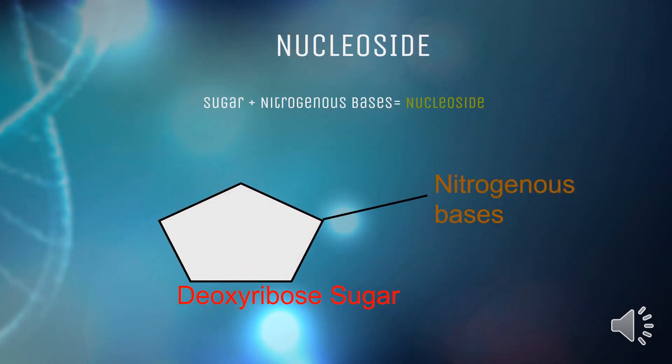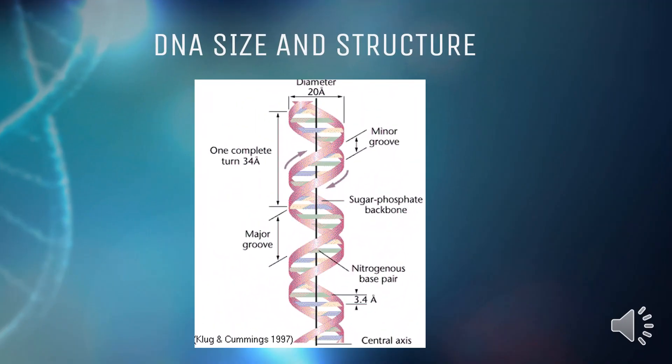Nucleosides are glycosamines that can be thought of as nucleotides without a phosphate group. A nucleoside consists of a nitrogenous base and a 5-carbon sugar — either ribose or 2-deoxyribose. There are two grooves that run the length of the DNA double helix: the major groove is 12 angstroms wide, while the minor groove is 6 angstroms wide. The DNA molecule has a diameter of 20 angstroms. Watson and Crick also uncovered that purine bases always pair up with pyrimidines to ensure the DNA diameter remains constant. The normal distance between two successive base pairs within a DNA is 3.4 angstroms.